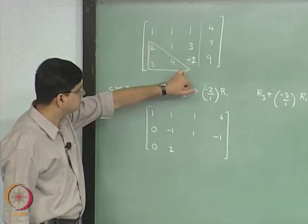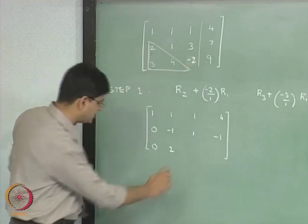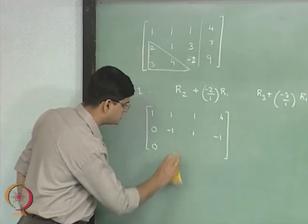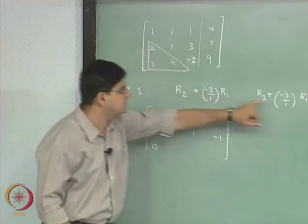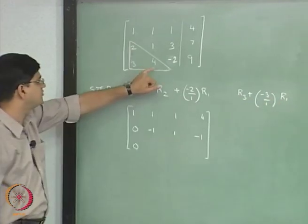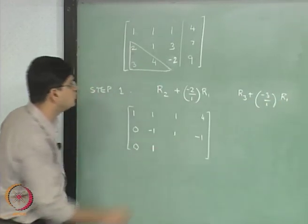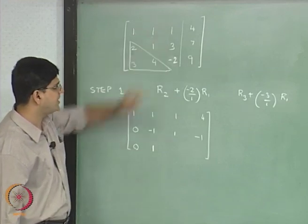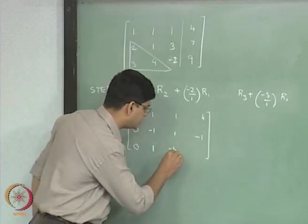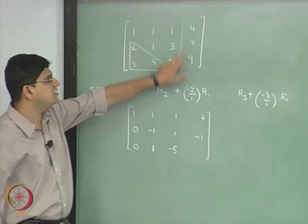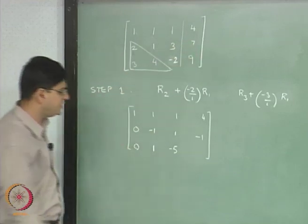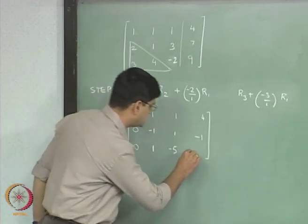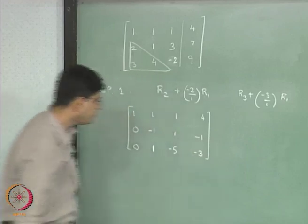This is going to be 4 minus 2 which is going to be equal to 2, this is 4 minus 3, not 4 minus 2, 4 plus (-3) multiplied by 1. So 4 minus 3 which is going to be equal to 1, this is -2 minus 3 which is going to be -5, and 9 minus 12 which is going to be equal to -3 over here.